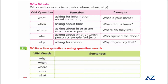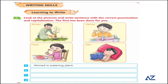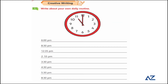Make sentences with the given words on the spaces provided in your book. Look at the pictures and write sentences with correct punctuation and capitalization — the first one has been done for you. You have pictures of four children and have to write sentences about each. In the first picture, Ahmed is watering the plant. In the next, Hamza is brushing his teeth. Write sentences about the remaining pictures.